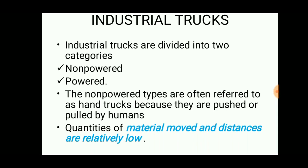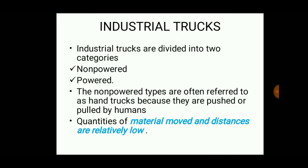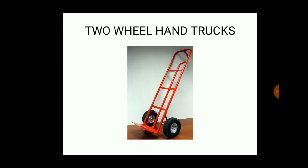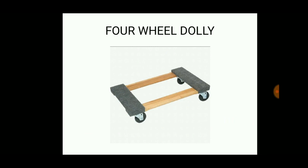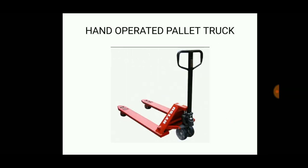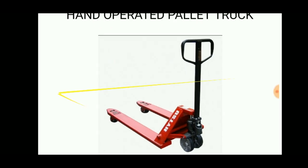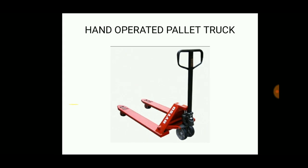Industrial trucks are divided into non-powered, which are manually handled, and powered, which are electrically or engine powered. Examples of non-powered trucks include a two-wheel hand truck, a four-wheel dolly, and a hand-operated pallet truck — in this type the height cannot be adjusted through the jockey mechanism.